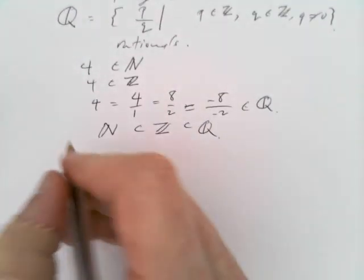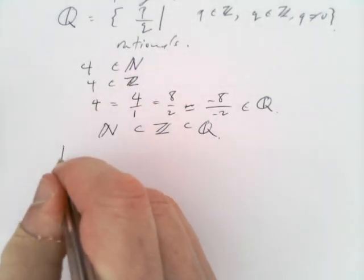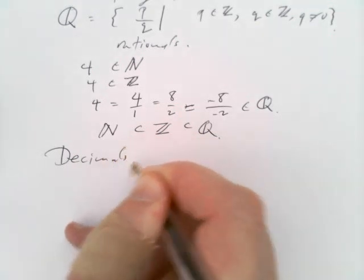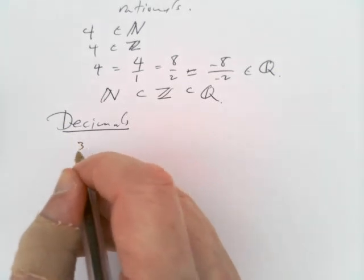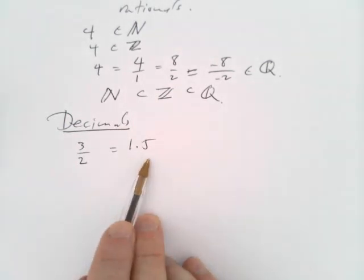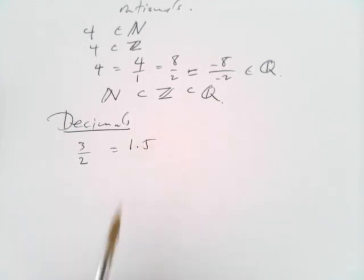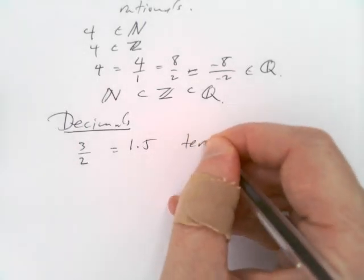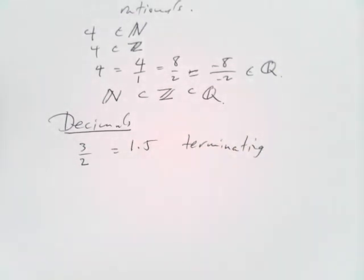When we look at rational numbers, we have to think about how they look when you write them down as decimals. For example, the fraction 3 halves can also be written as 1.5 — it has an integer part and then a decimal part. It only has that one digit after the decimal point, the 5. That's what we call a terminating decimal — it terminates, with only finitely many digits after the decimal point.